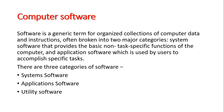Computer software refers to a collection of programs. It is a series of instructions given to the computer to obey. Those instructions are written such that the computer can follow and execute them. When we say the computer is executing the instructions, it is following them. The series of instructions are generally referred to as software.